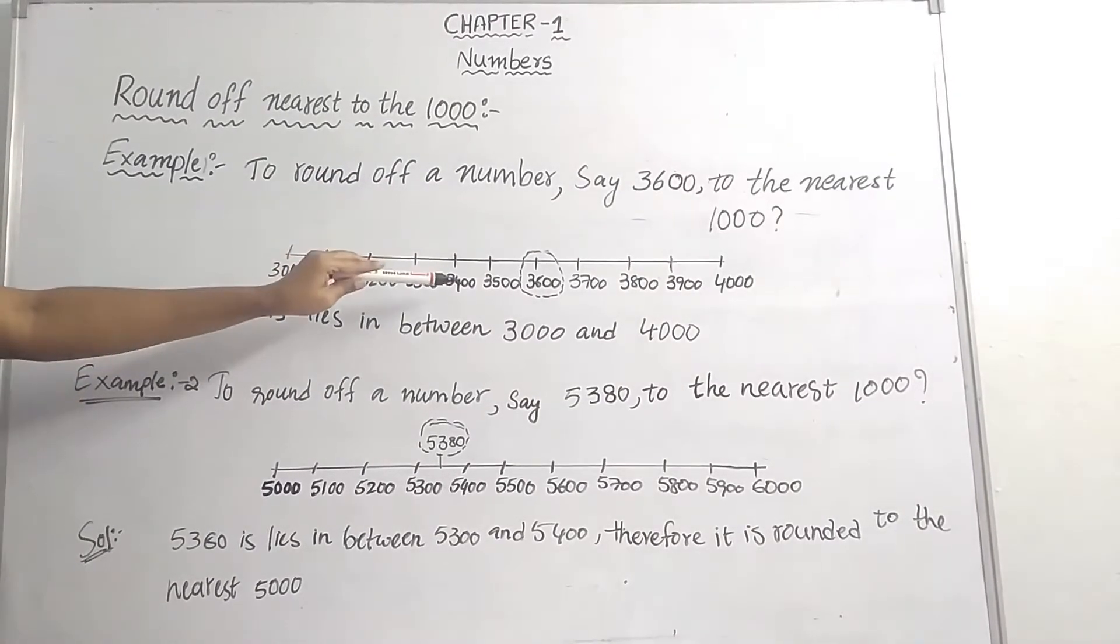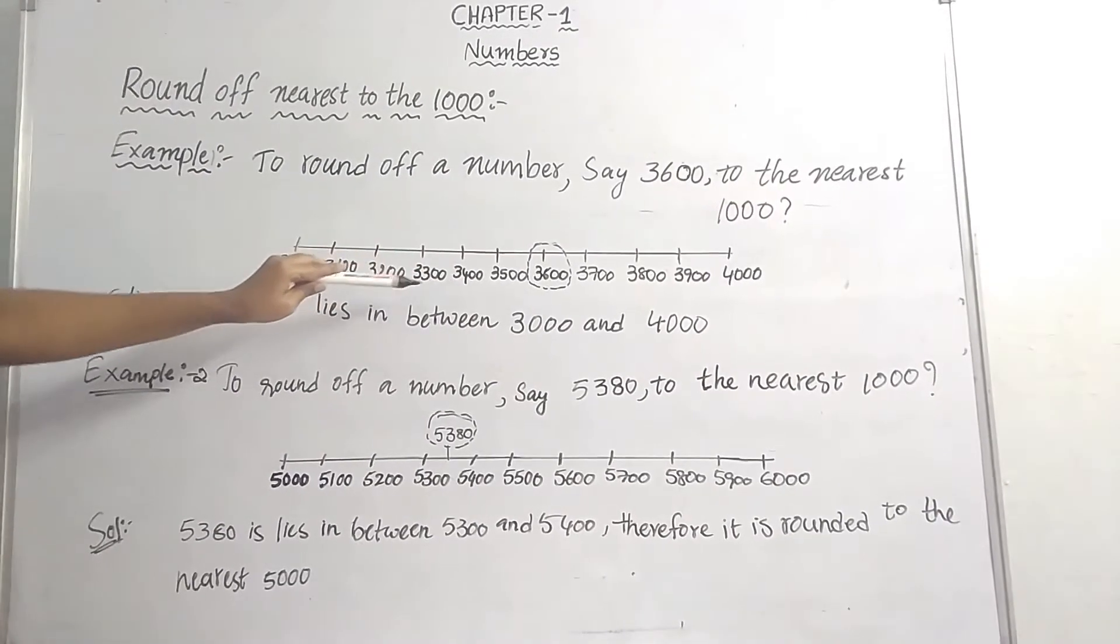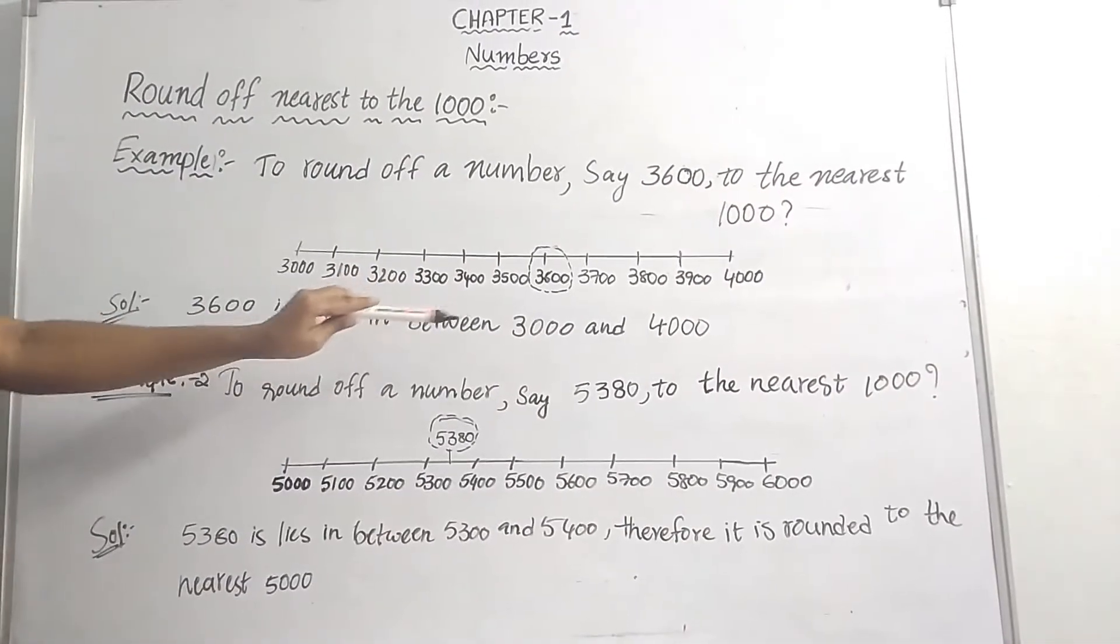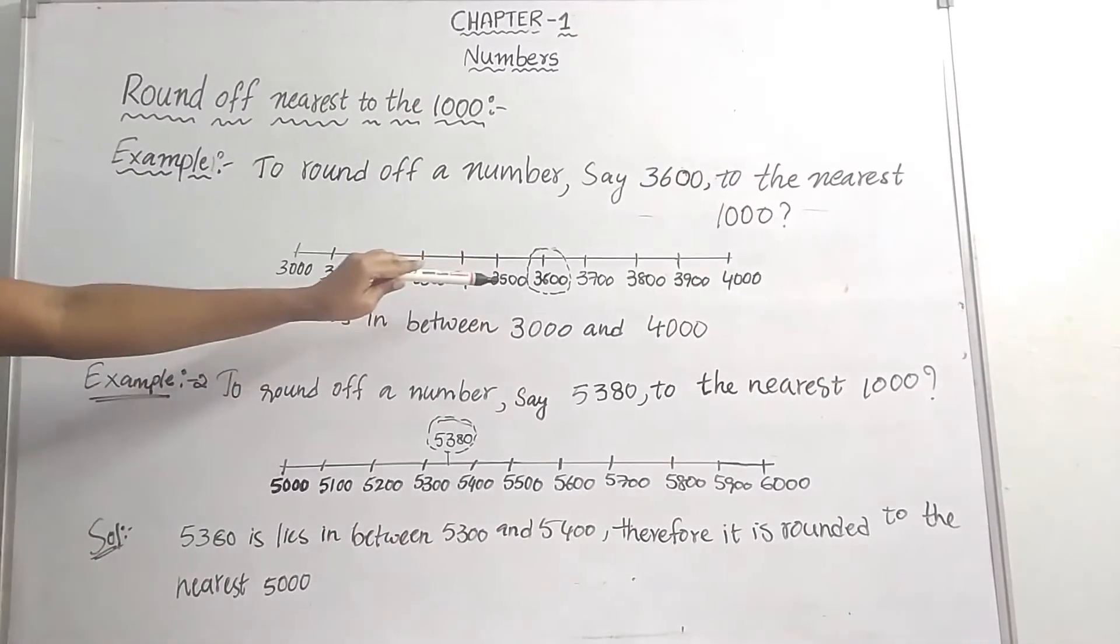We want which number? 3600. So I am rounding 3600. It lies in between 3000 and 4000. And the rounding number, the nearest rounding number is what?